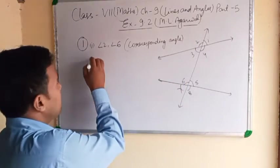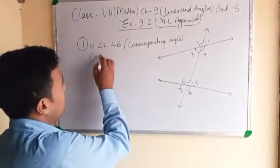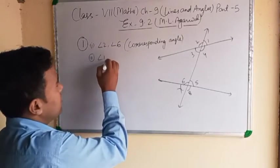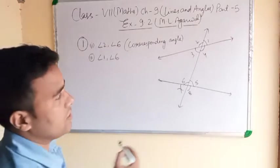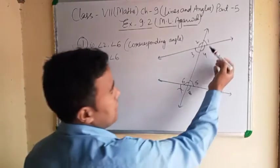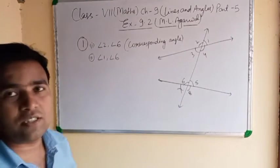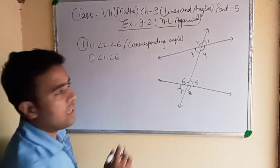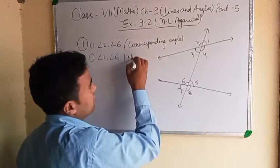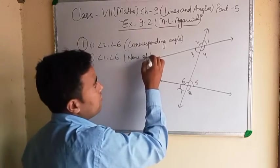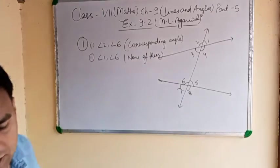Now the second part: angle 1 and angle 6. Angle 1 and angle 6 — it is not any special angle type. We will write: none of these.